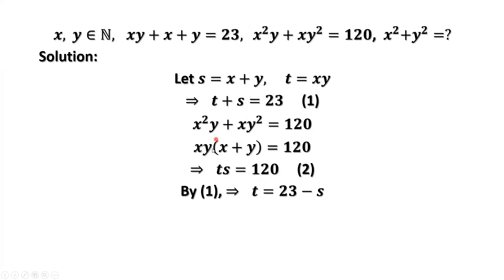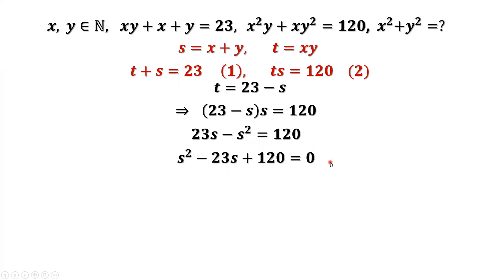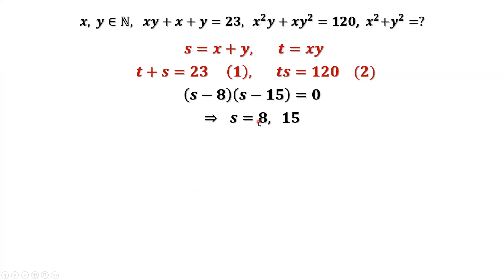From the first result, we have t equals 23 minus s. We can substitute t in result 2 by 23 minus s. Then we have a quadratic equation about s. Simplify the left-hand side: we have 23 minus s, times s, equals 120. Move everything to the left-hand side. We can use the quadratic formula or factoring to find the two roots for s. s equals 8,